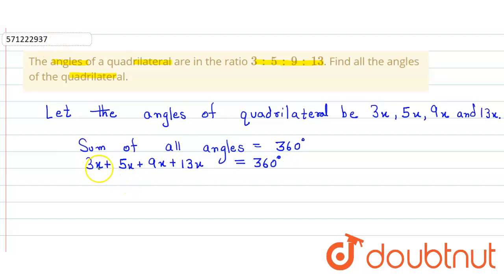So now we just simply solve it. Here 3 + 5 + 9 + 13 equals 30x, and that will be 360 degrees.